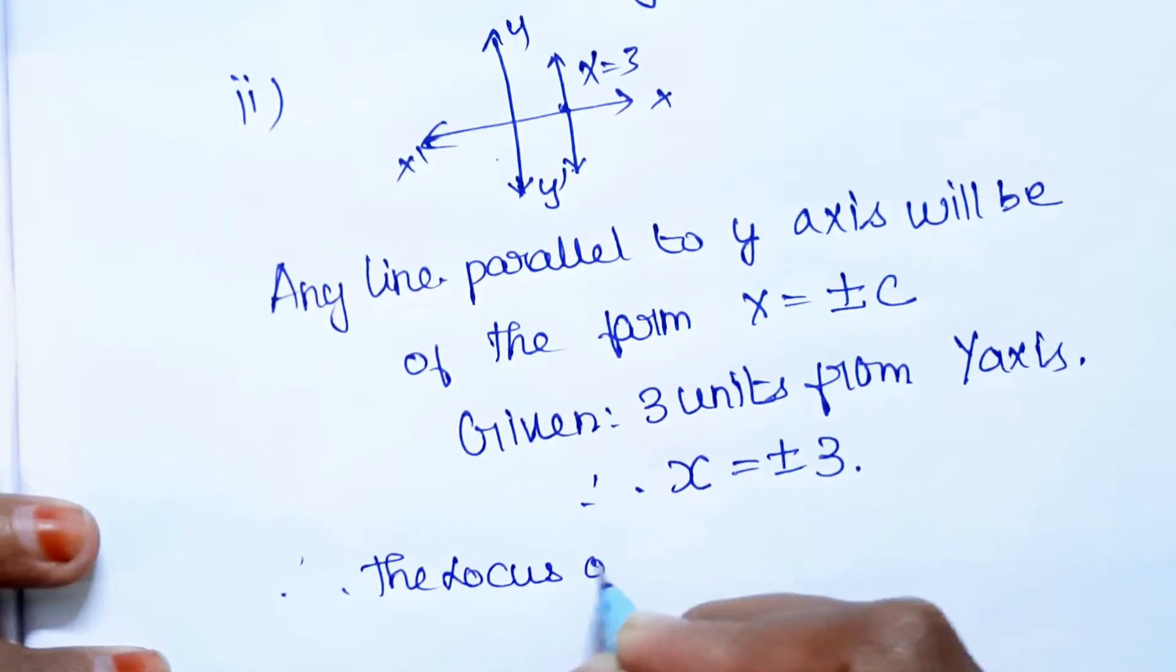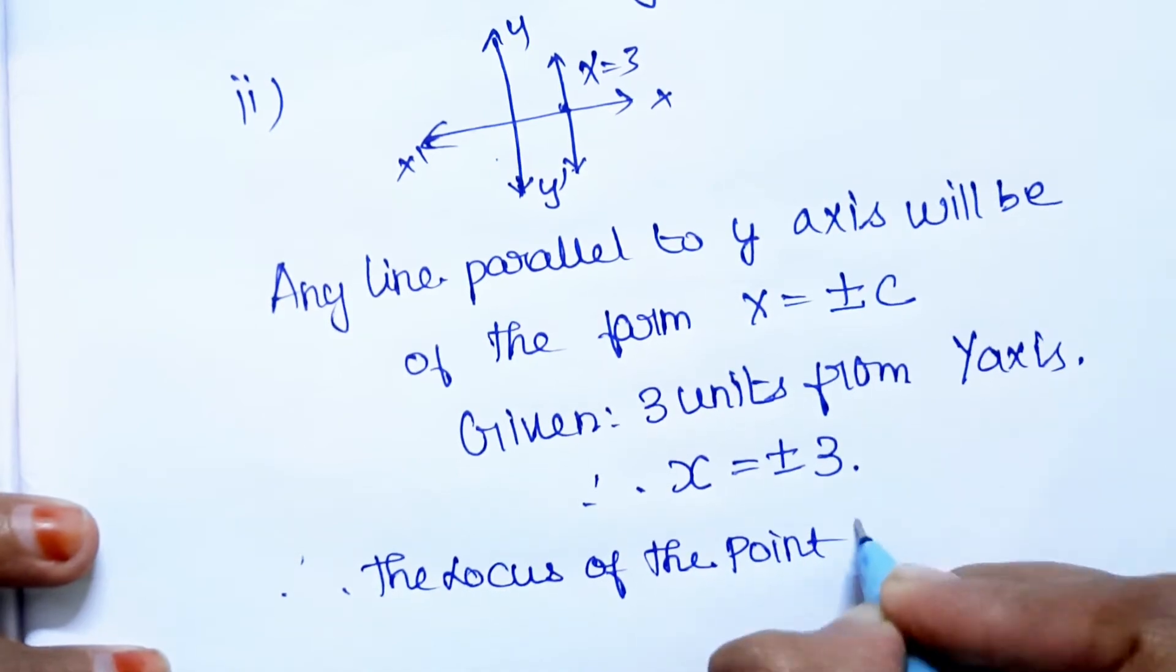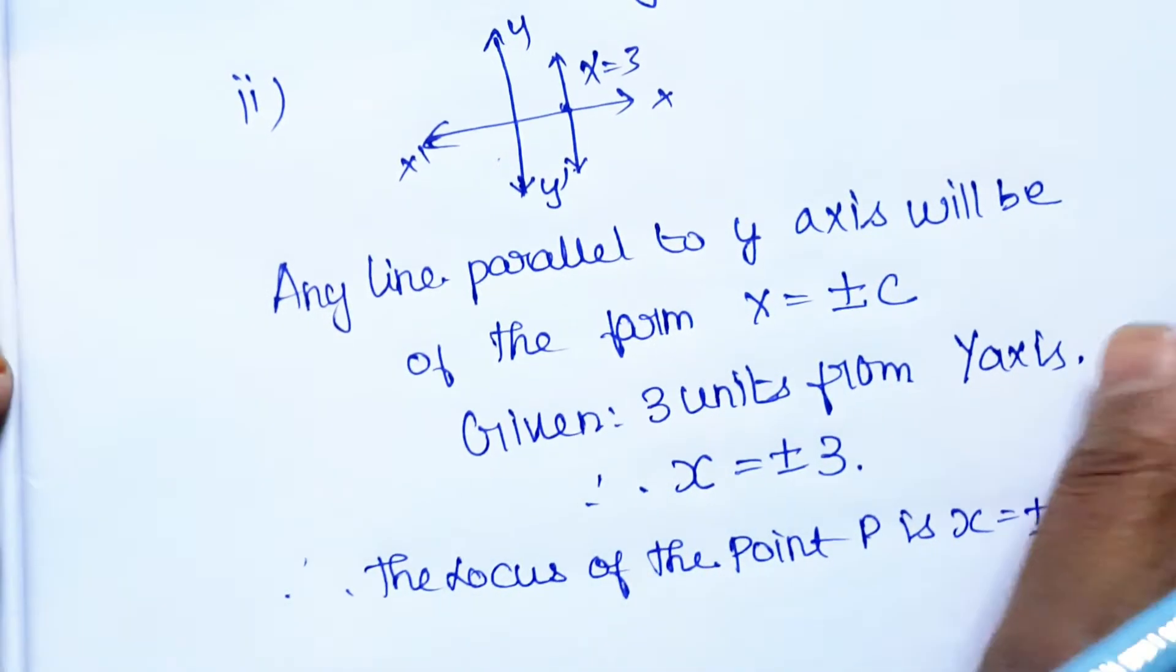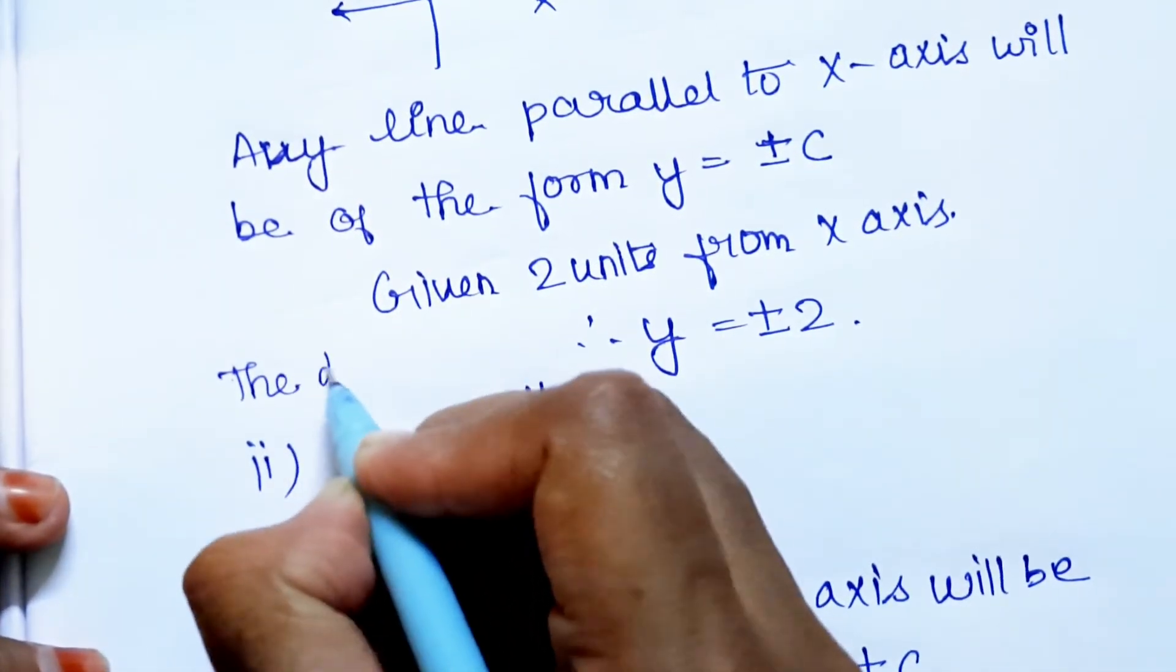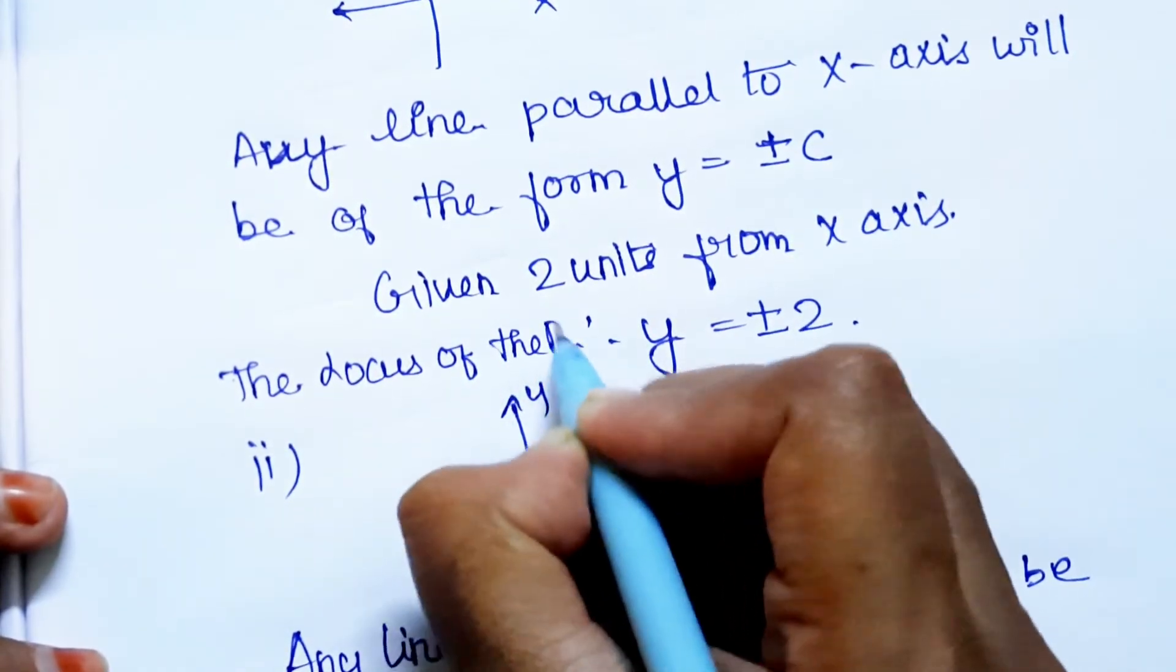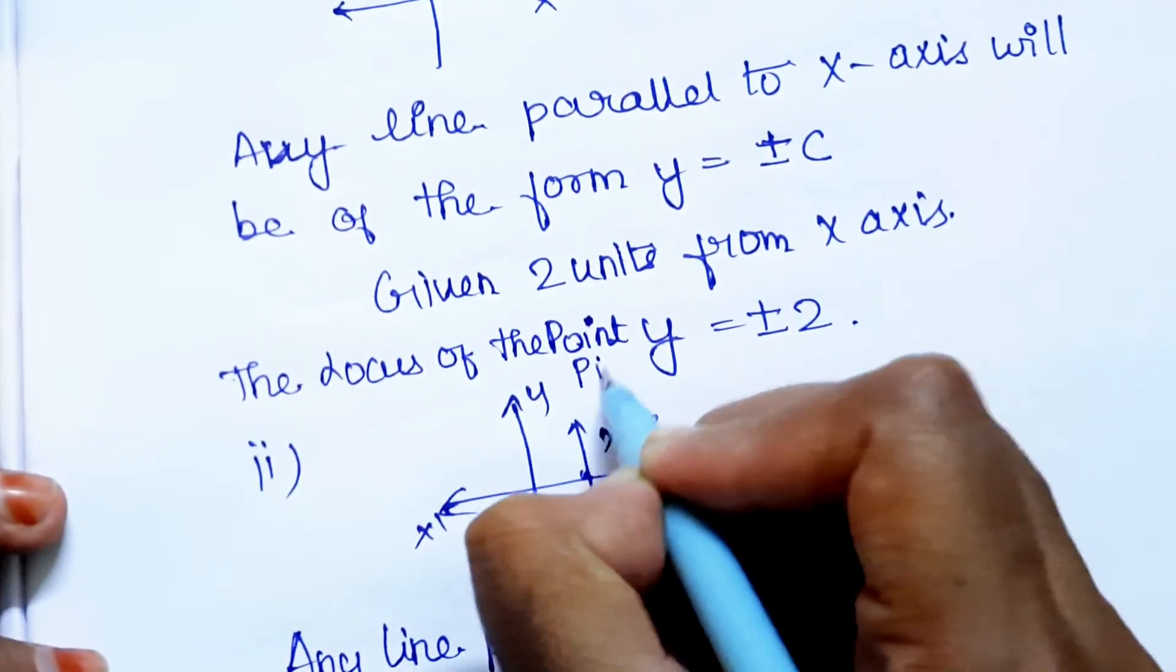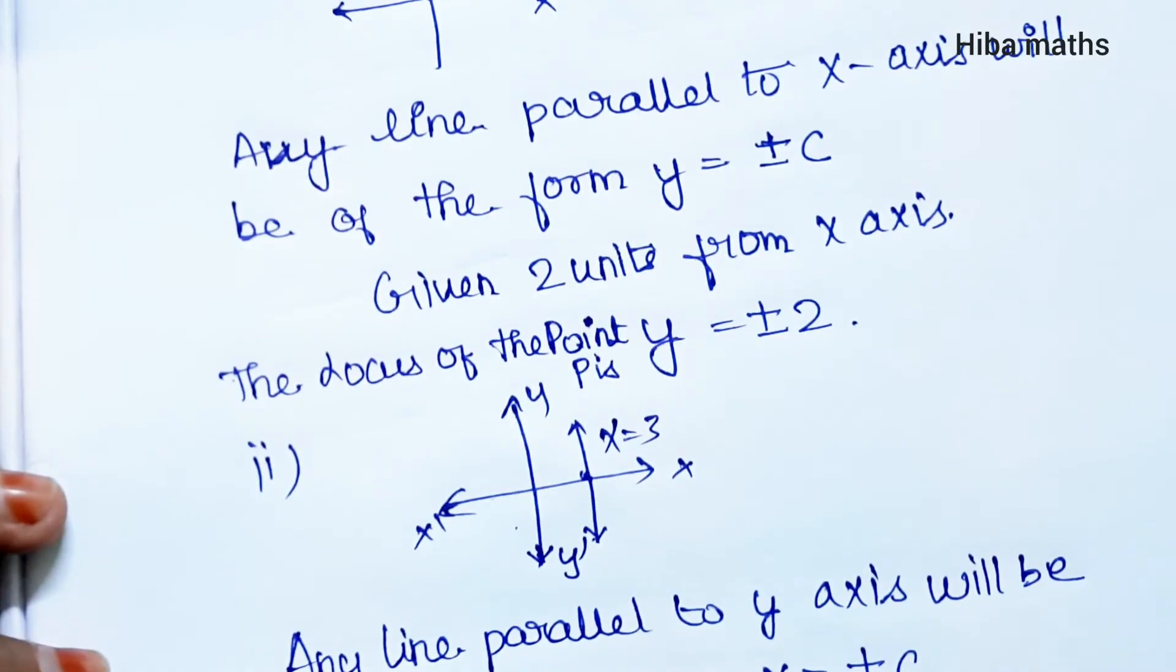Therefore, the locus of the point P is x equals plus or minus 3, y equals plus or minus 2. This is the locus of the point.